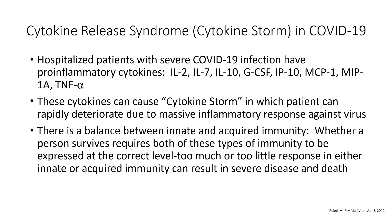I want to discuss cytokine release syndrome, which is also called cytokine storm. Hospitalized patients with severe COVID-19 infection have numerous pro-inflammatory cytokines. These cytokines can cause a cytokine storm in which a patient can rapidly deteriorate due to the massive inflammatory response against the virus. There is a balance between innate and acquired immunity, and whether a person survives requires both types of immunity to be expressed at the correct level. Too much or too little response in either innate or acquired immunity can result in severe disease and death.